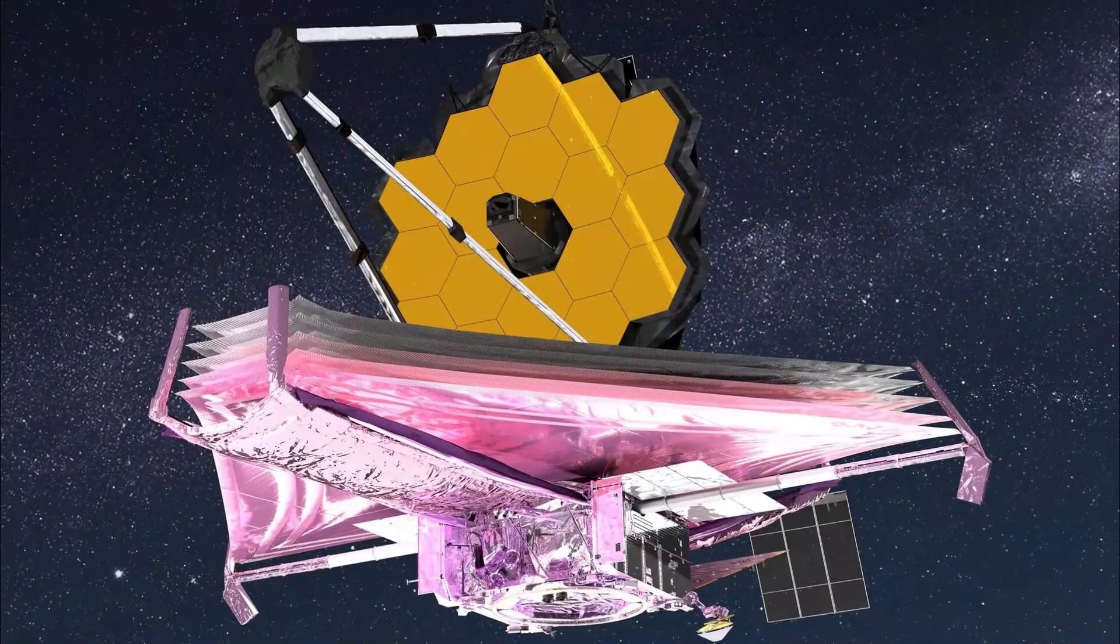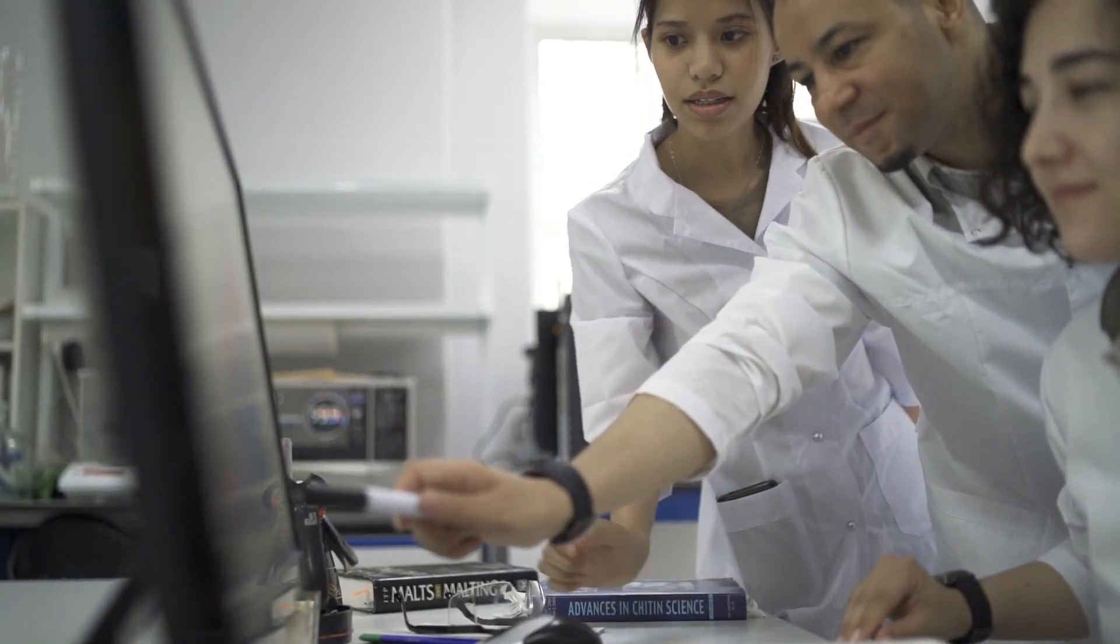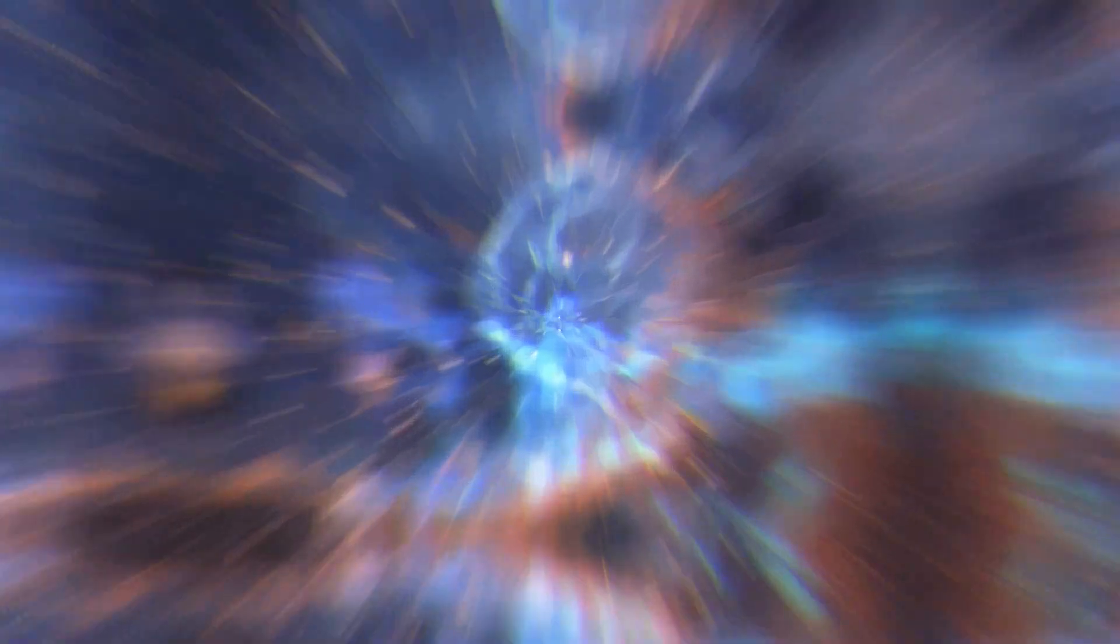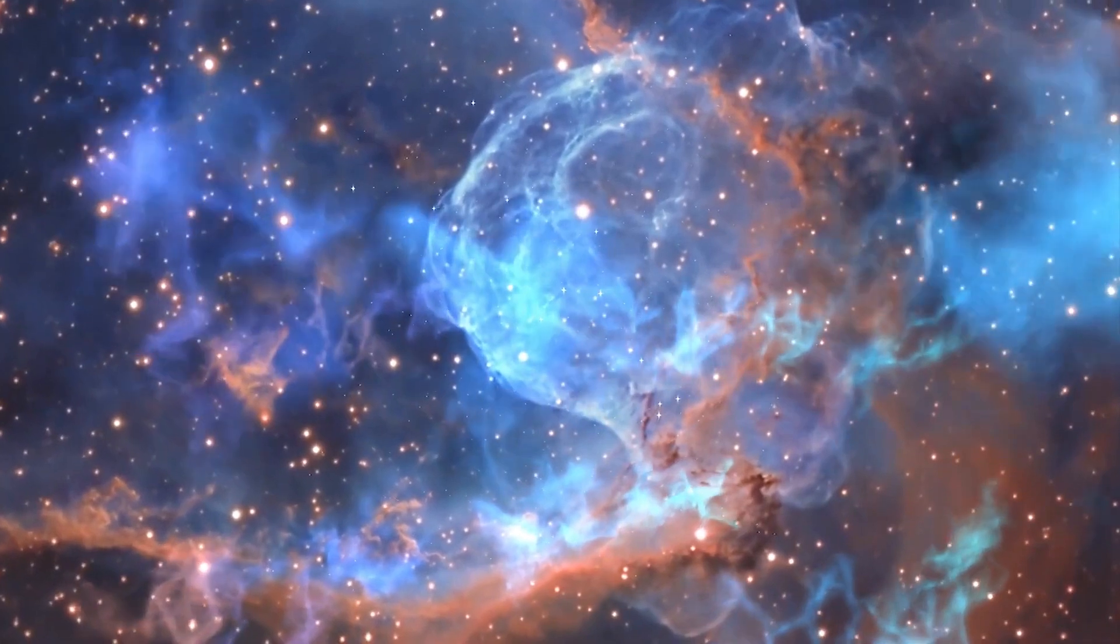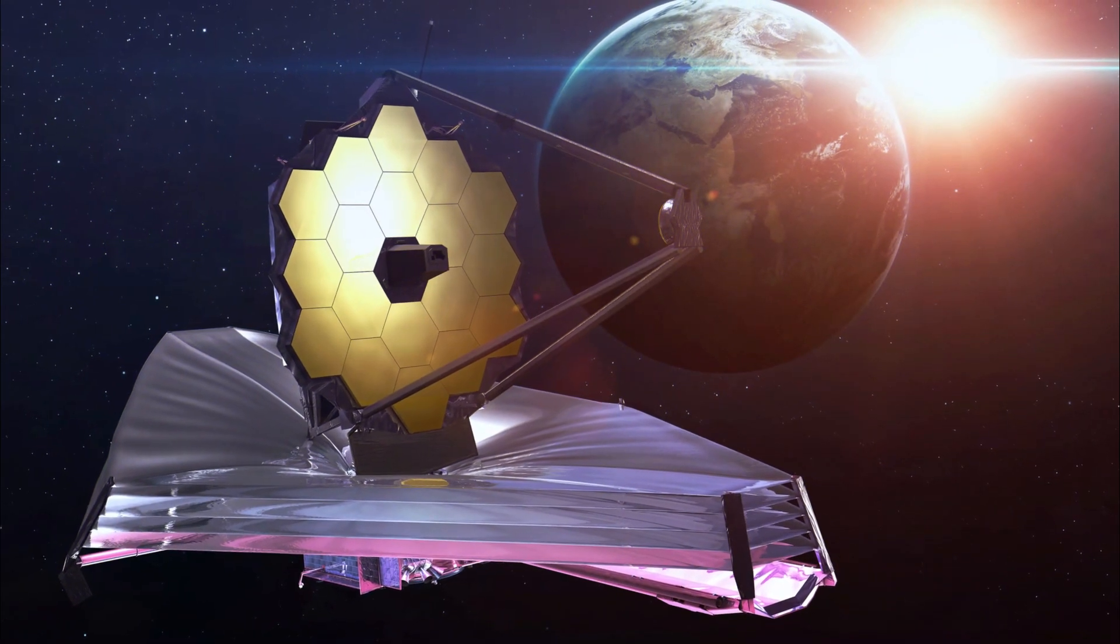Thanks to the superpowers of the JWST, scientists were able to spot these carbon fingerprints in the light from distant galaxies. And let me tell you, that's no easy task. The light from these galaxies has been on a cosmic journey for billions of years, stretching from ultraviolet to infrared wavelengths.